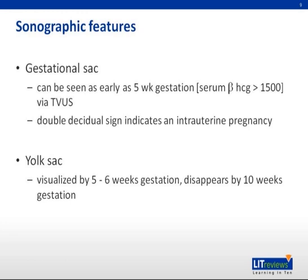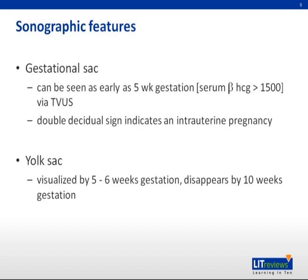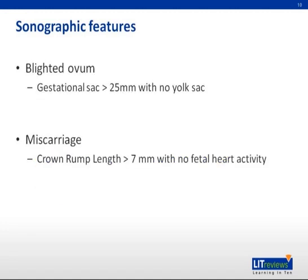Sonographic features: Features to look out for include a gestational sac, which may be intrauterine, within the uterus, or extrauterine, outside the uterus. This can be seen as early as five weeks gestation, usually when the serum beta-HCG is above 1500, via transvaginal ultrasound of the pelvis. A double decidual sign indicates an intrauterine pregnancy. In general, the rate of increase of the gestational sac size is 1.2 millimeters per day. The yolk sac is usually visualized within five to six weeks gestation and disappears by 10 weeks gestation.